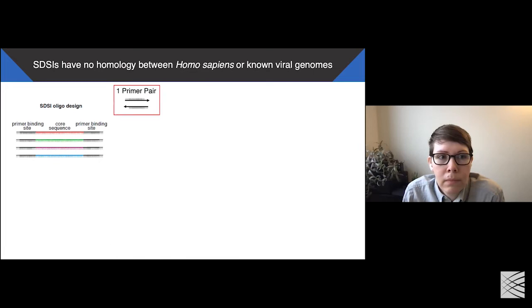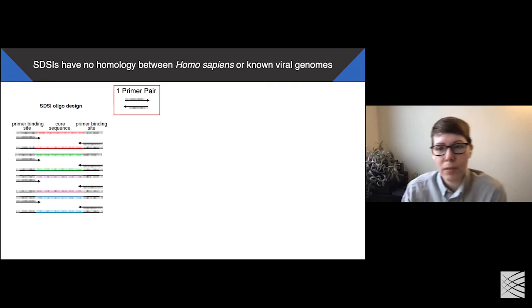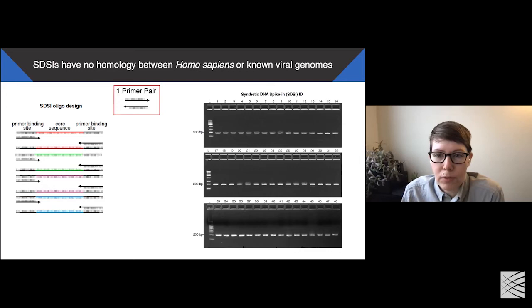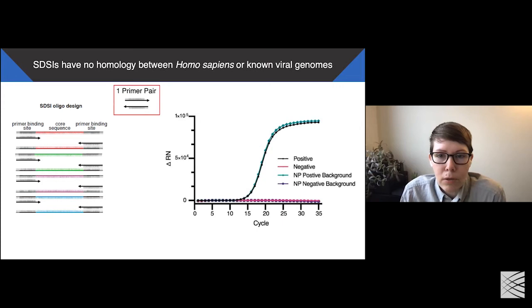As the primer binding sites are the same for each spike-in, we only needed to use one primer pair to amplify each SDSI. Using primer BLAST, we predicted that the sequences had limited homology to common organisms, and thus were unlikely to amplify off-target sequences. This one primer pair can easily be added to the primer pools for any short amplicon sequencing panel. We used these primer pairs to amplify the SDSI oligos within our intended amplicon sequencing panel primer pools and then ran the product on a gel to confirm that all SDSIs amplified and resulted in a single clean product of the expected size. We also ran a qPCR for an SDSI in the same SDSI in a nasopharyngeal NP swab background to confirm that the SDSIs amplify in the presence of clinical sample background.